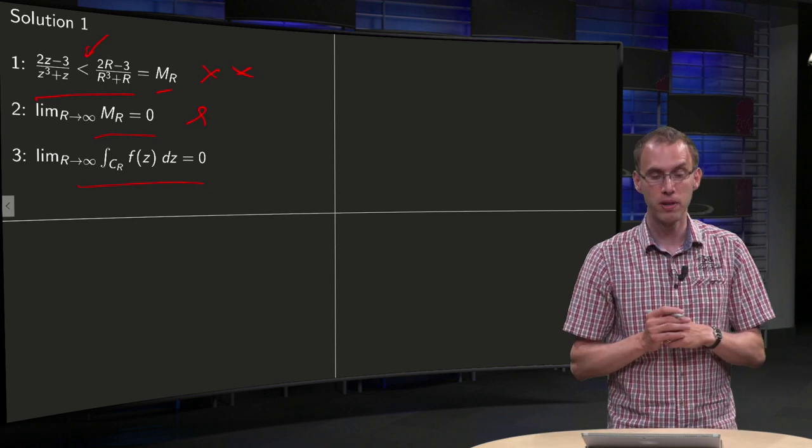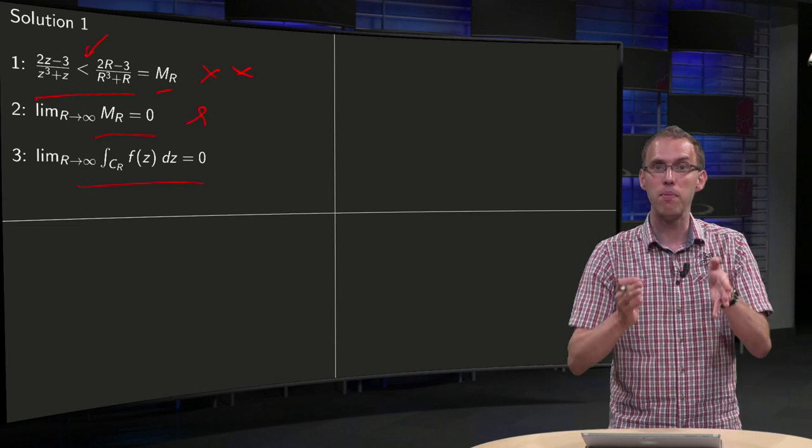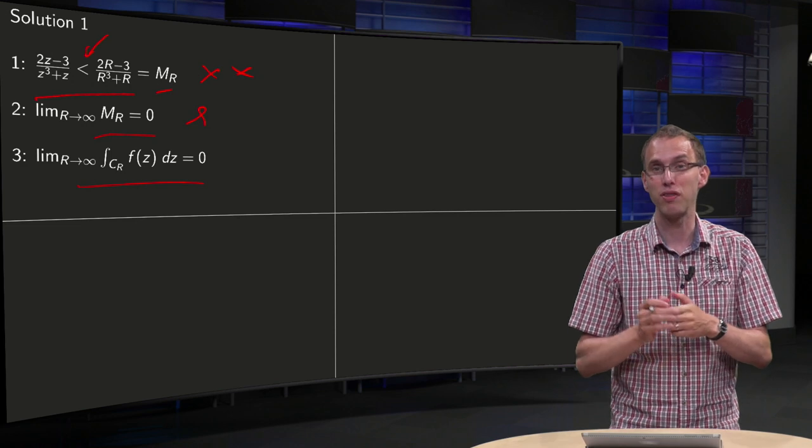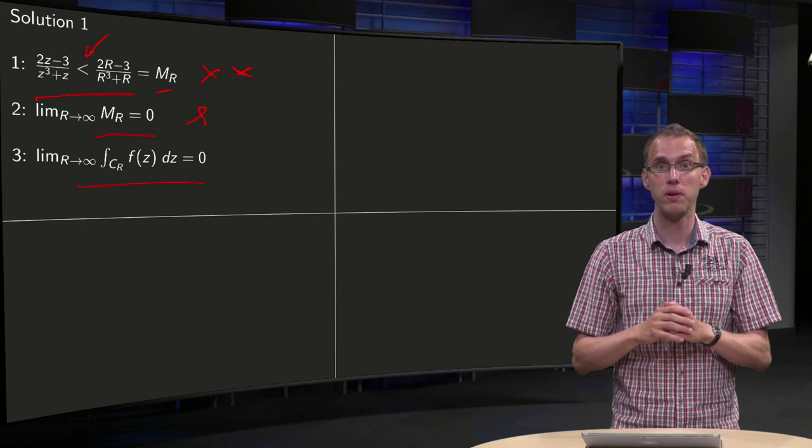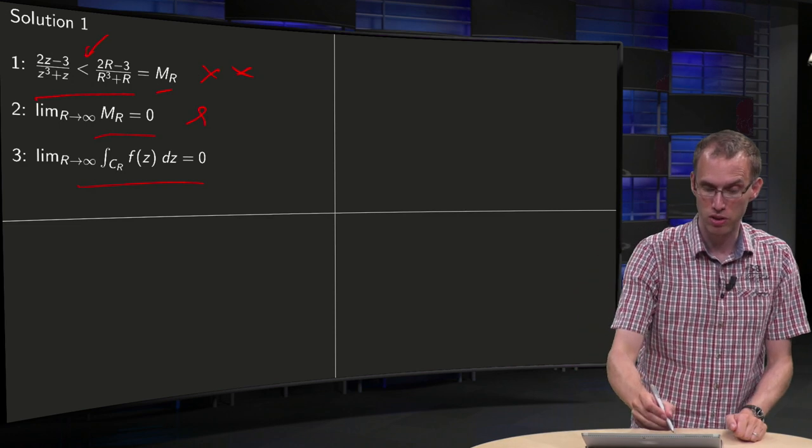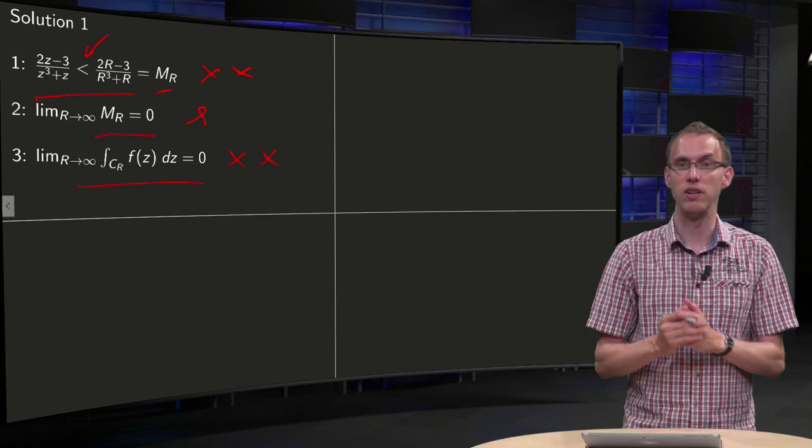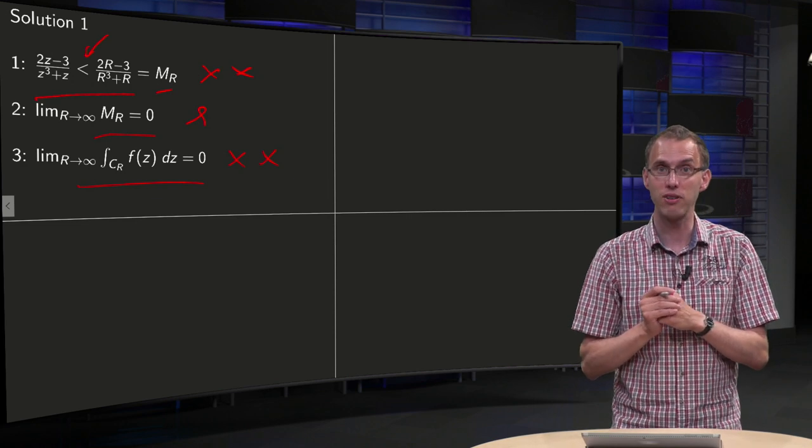And third step, well, if your MR goes to 0, that's not enough for the integral to go to 0, because the length of the integration interval blows up, so you do not know that your integral will be 0 in the limit. So this step is also incorrect.